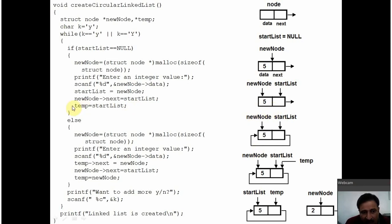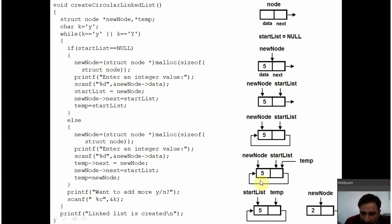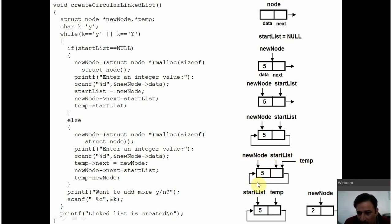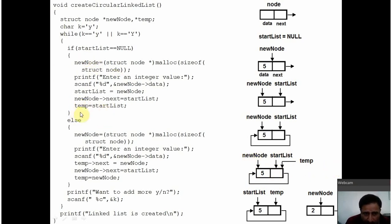Can you see that? After that, one extra pointer, temp, is set to point at startList. Let me tell you what is the use of these three pointers. Temp will be used for connecting the nodes in between. StartList will always be set to point at the first node. And newNode will be used for creating new nodes. Because the if block was executed, control will never go into else.